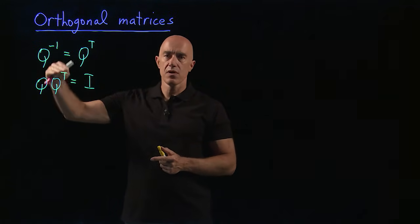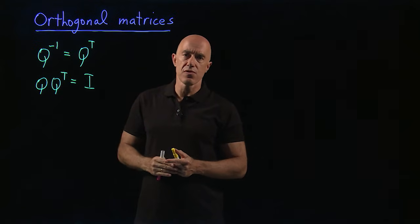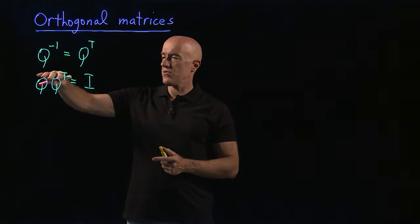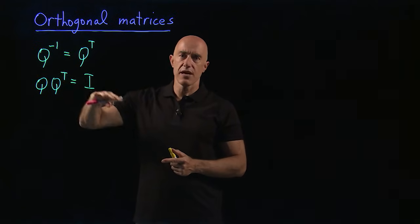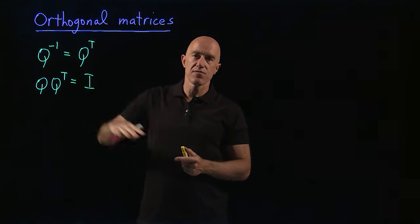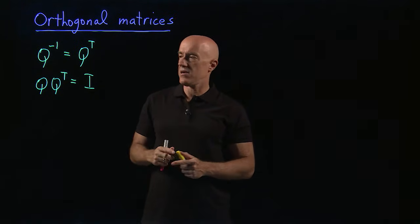So the rows of Q are orthonormal vectors. When you multiply them against each other, you get 1. And when you multiply different rows together, you get 0.